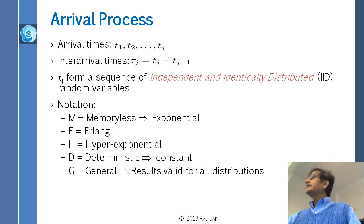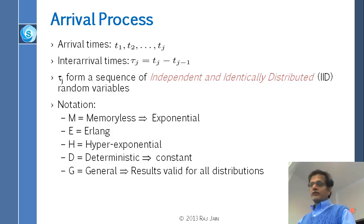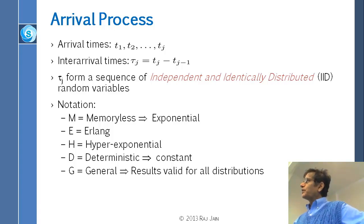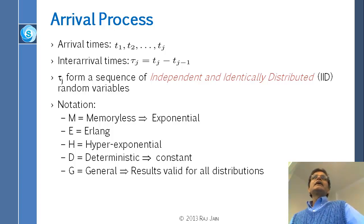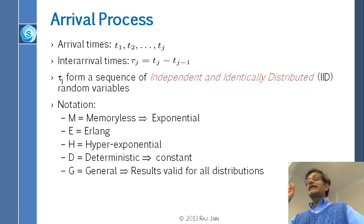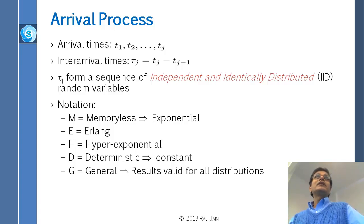We notate that arrival process by M — not by E. All others are determined by their names: Erlang distribution is E, hyper-exponential is H, deterministic or constant is D, and any general distribution is G. You must have heard the term M/M/1 queue. The first M is the arrival process — it indicates the inter-arrival times are memoryless. M means memoryless.